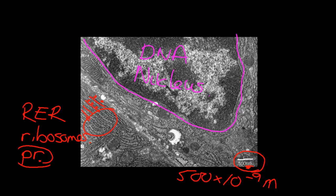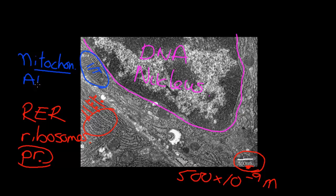There are a couple of other features to notice in this section. Up here, can you see this structure sitting here — with the edges and the lines running into it? This is called a mitochondria. Mitochondria produce ATP, which is really the mechanism by which energy is transported around the cell. So this is what a common transmission electron micrograph looks like.